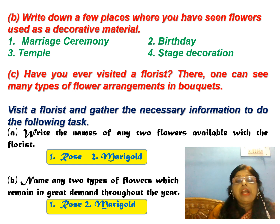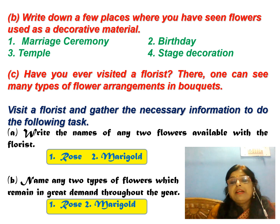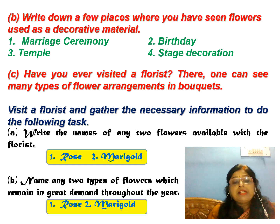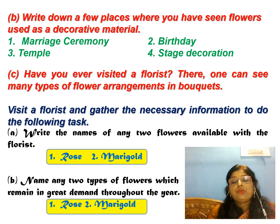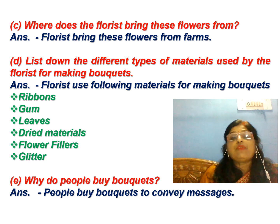Next question: have you ever visited a florist? There one can see many types of flower arrangements. A florist is someone who sells flowers. Write the names of any two flowers available with the florist — rose and marigold. These are two common flowers always available with the florist and are in demand throughout the year. Florists bring these flowers from farms.